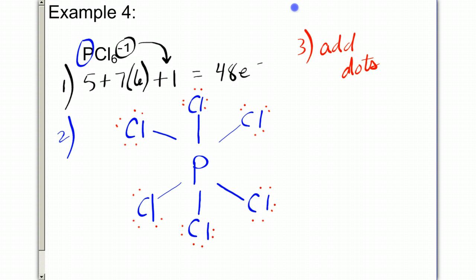Each chlorine atom needs 6 dots added to it. Notice I put the dots kind of like in pairs. Notice phosphorus already has a total of 2, 4, 6, 8, 10, 12. Remember, it can exceed the octet rule. So it's okay that it has more than 8.